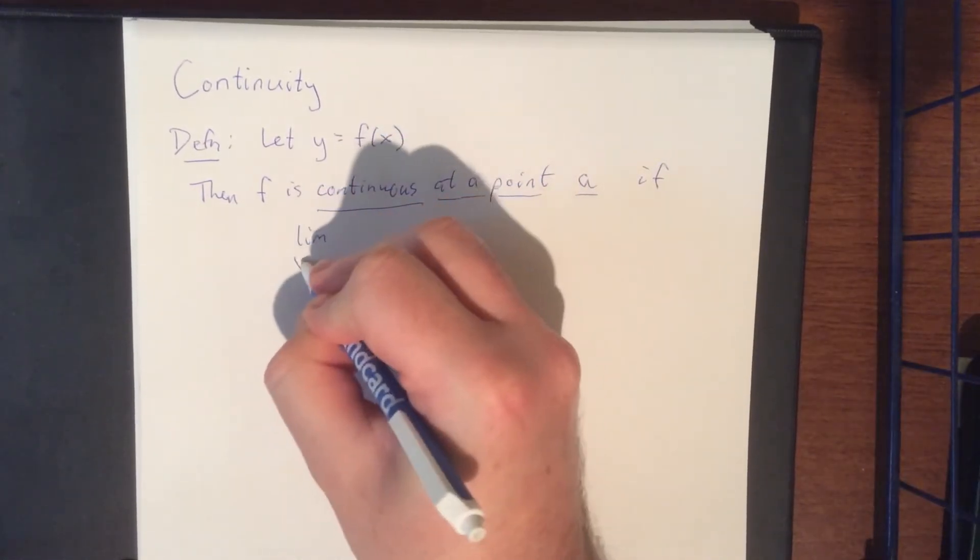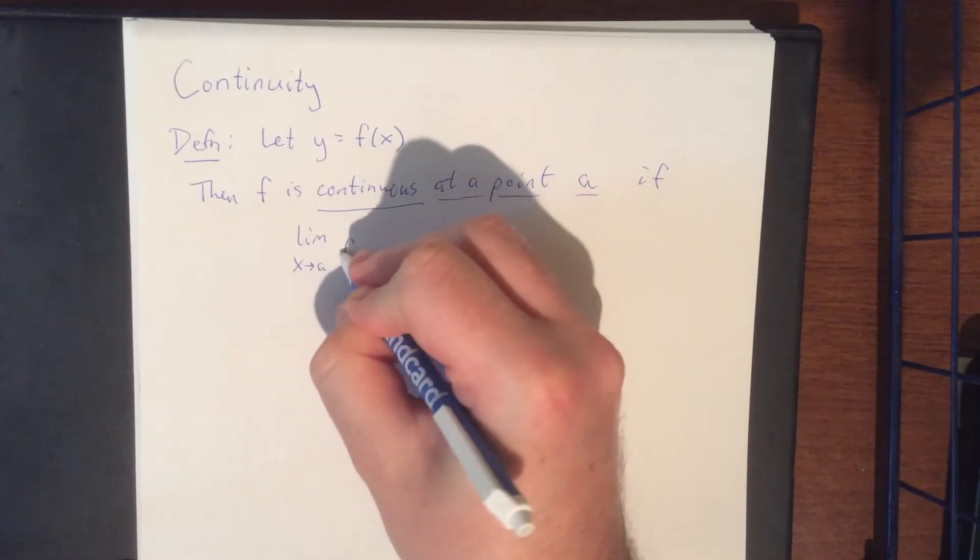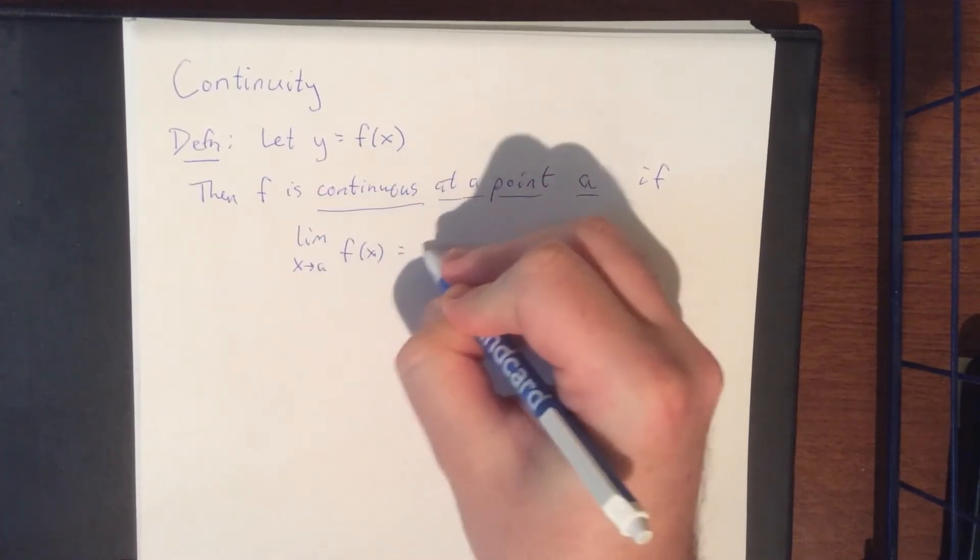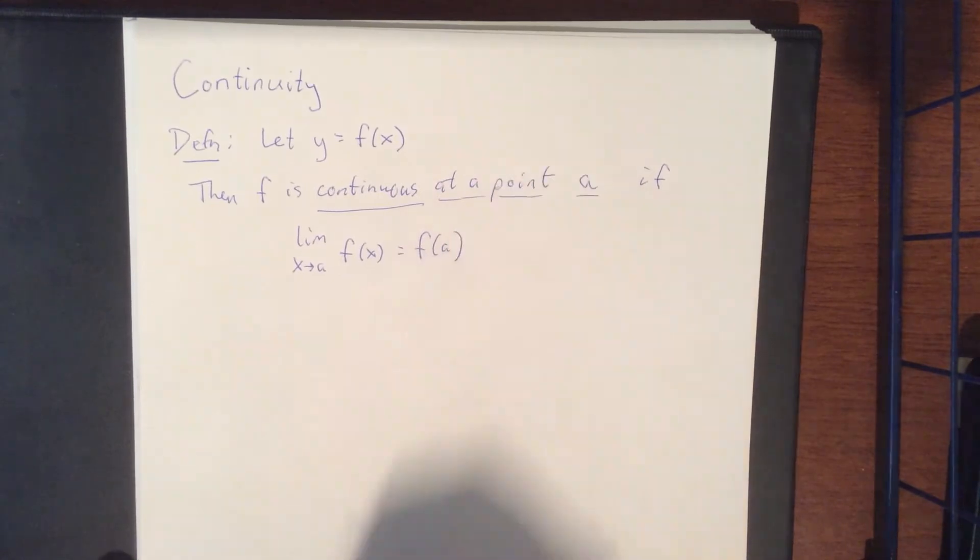If the limit as x approaches a of f of x is equal to f of a. So this is what it means to be continuous at a given point.